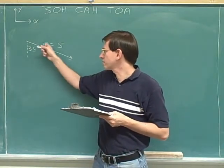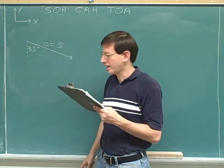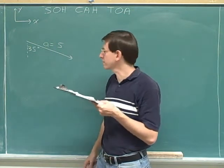This angle is 35 degrees with the vertical, and our vector here, A, has a length of 5. Please break this into components.